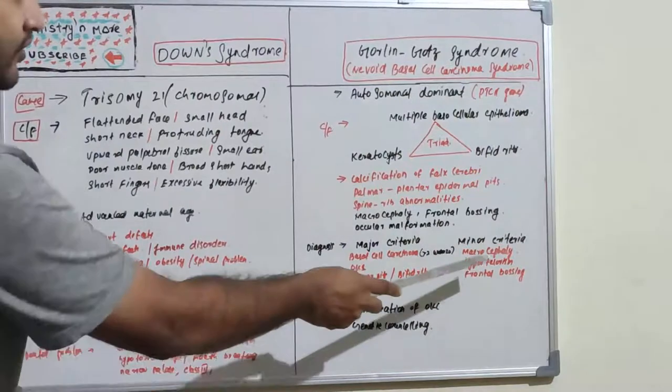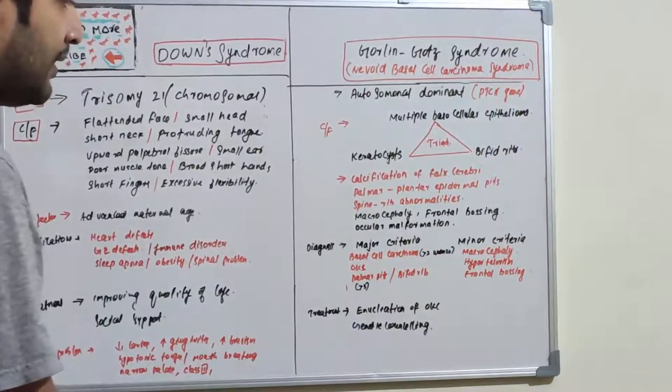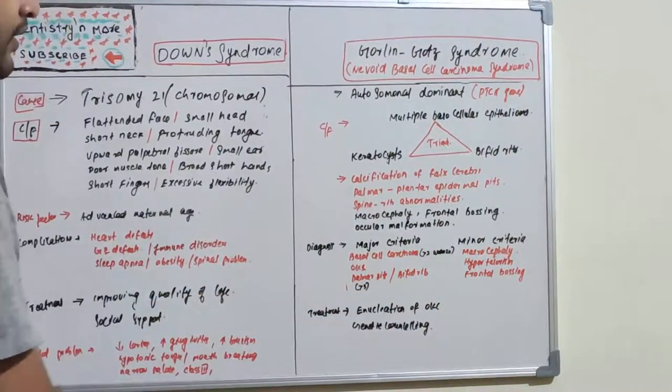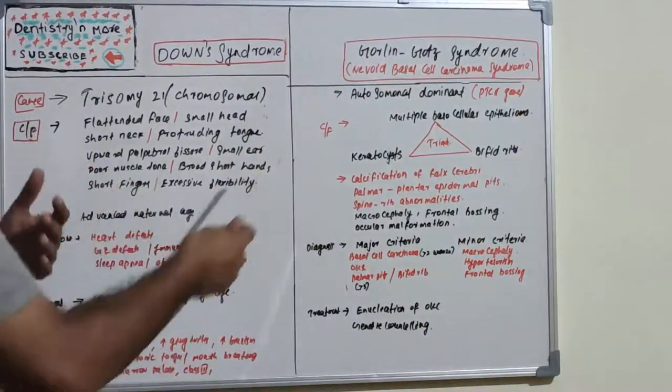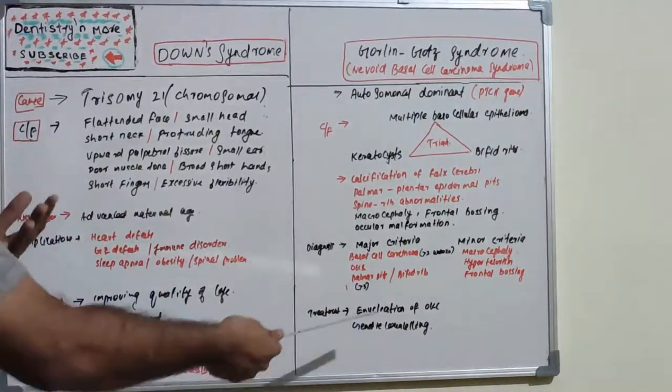The minor criteria include macrocephaly, hypertelorism, and frontal bossing. These are the minor criteria to diagnose Gorlin-Gott syndrome or just known as Gott syndrome. Treatment is basically the enucleation of all the cysts or cases.